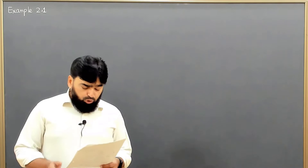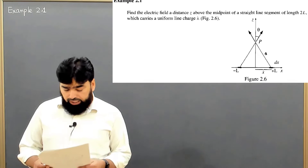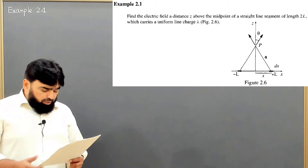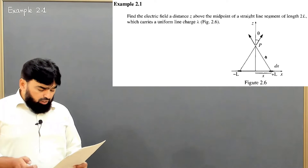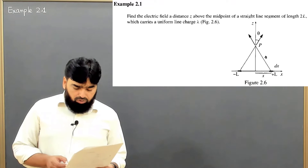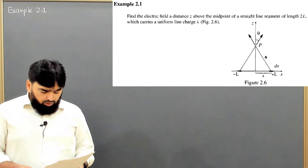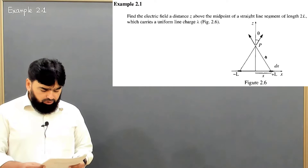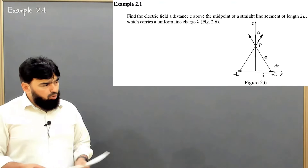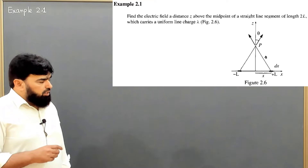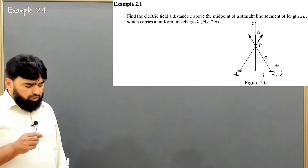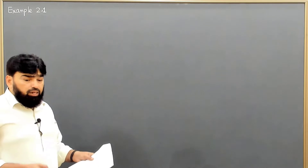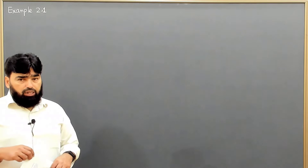We will solve example 2.1. The example says: find the electric field a distance z above the midpoint of a straight line segment of length 2L which carries a uniform line charge λ, as shown in figure 2.6. We are going to find the electric field at a distance z above a line segment, where the observation point is just above the midpoint, and the line segment carries a line charge density λ.